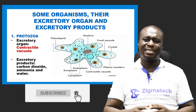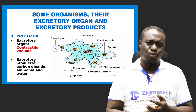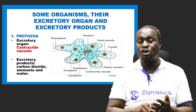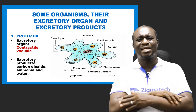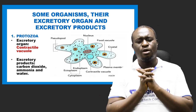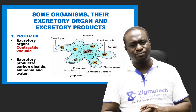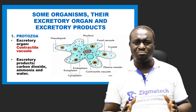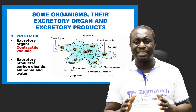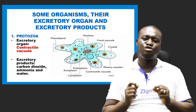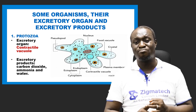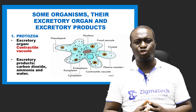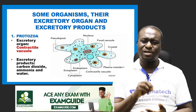Now let's look at some organisms and their excretory organs and waste products, from unicellular to complex multicellular organisms and plants. We have the paramecium, euglena, and chlamydomonas — all examples of protozoa. All protozoa are unicellular and microscopic organisms. The excretory organ of most protozoa is the contractile vacuole, an organelle found inside the cell.